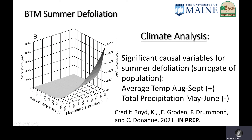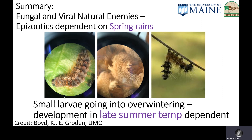This graph shows brown-tailed moth summer defoliation as a function of average temperature and precipitation. Summer defoliation was negatively related to precipitation in May and June, and positively related to temperatures in August and September. So in summary, the diseases important in suppressing brown-tailed moth populations are dependent on spring rains, and the survival of small larvae developing to overwinter is dependent on late summer temperatures.